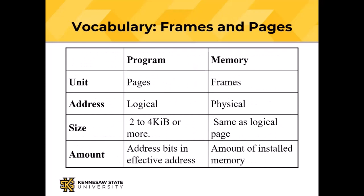The program is divided into pages, and the addresses in the program are logical addresses. Pages are 2KB or 4KB or more, and how many of them can be in a program depends on the number of address bits in the effective address — the one used to actually access memory after all the address arithmetic is done. Physical memory page frames must be the same size as pages. They are addressed with physical addresses in real memory, and how many page frames there are depends on the amount of installed real memory.